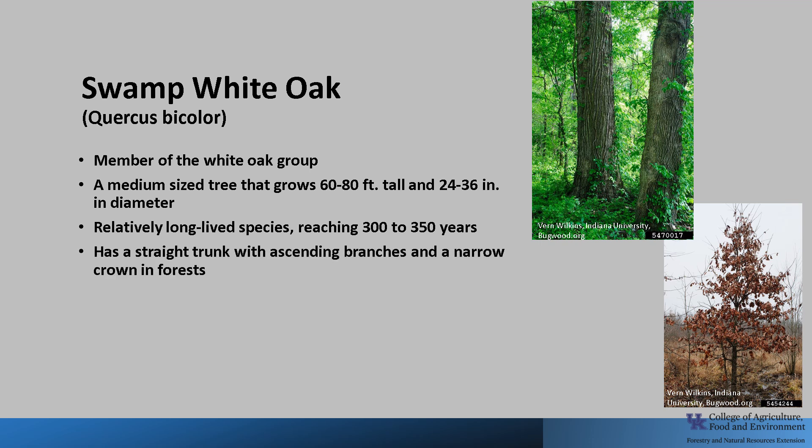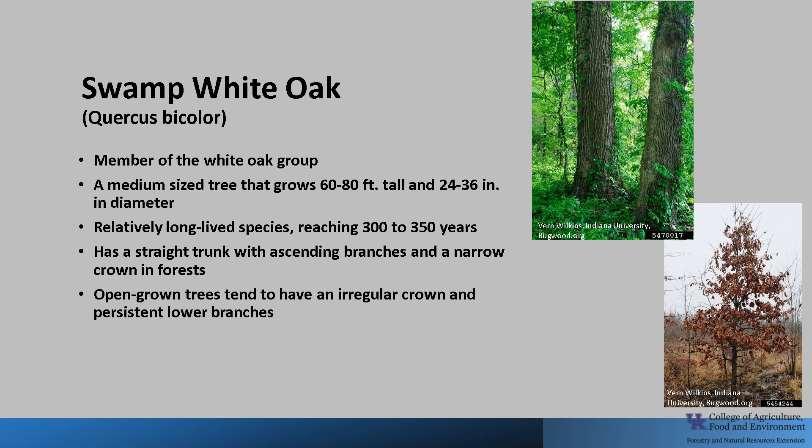In forest stands, it has a straight trunk with ascending branches and a narrow crown. However, open-grown trees tend to have an irregular crown and persistent lower branches. Swamp White Oak is often planted on golf courses, parks, and naturalized areas.